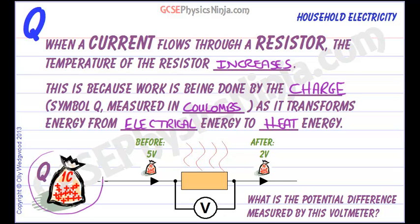Here is a coulomb of charge. When a coulomb of charge leaves a power supply it's energized — it's got some energy in it. The amount of energy that each coulomb has is called the voltage. So a 5 volt battery gives each of these coulombs 5 joules of energy — we call it 5 volts.